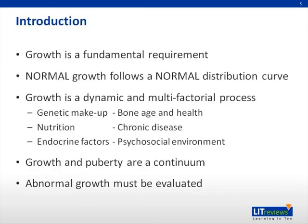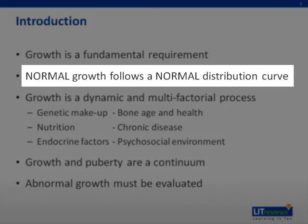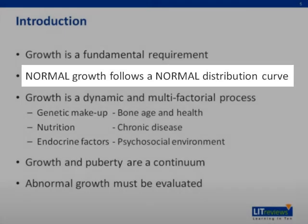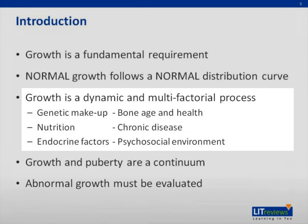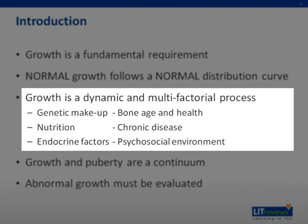Every child is expected to grow physically taller with age until they reach adulthood. Normal growth follows a normal distribution curve, which gives us an accepted range of heights considered normal for the population. Growth is a dynamic process dependent on many different factors that will be discussed later.